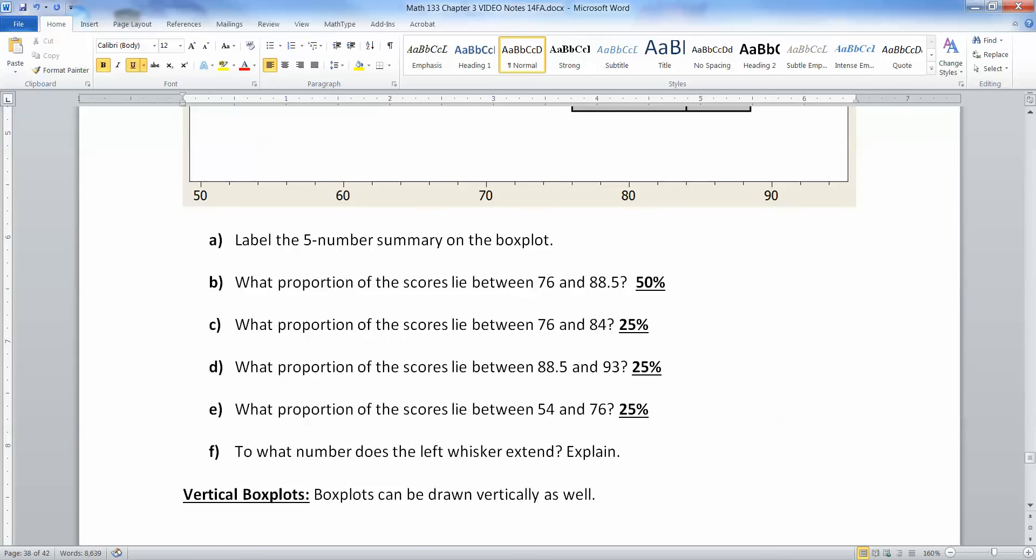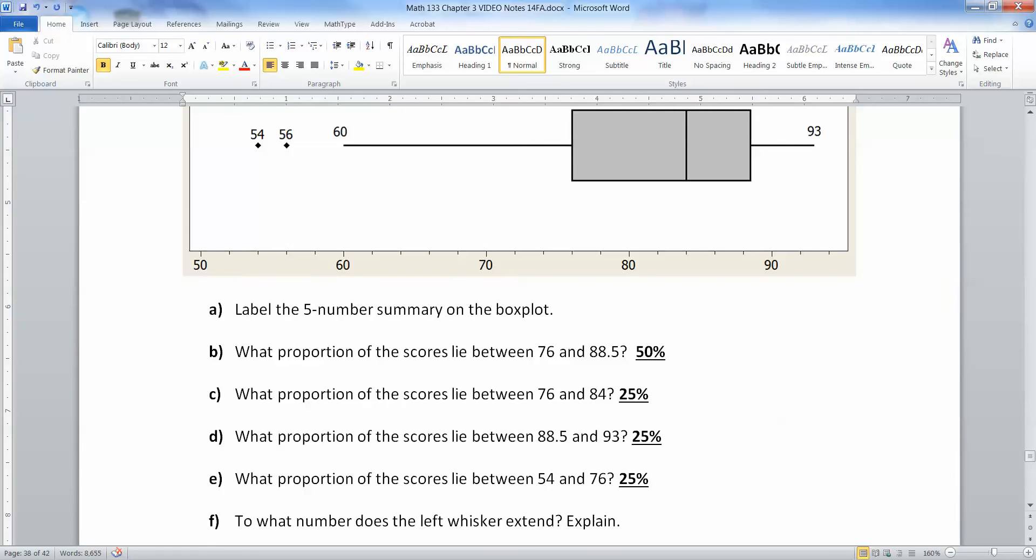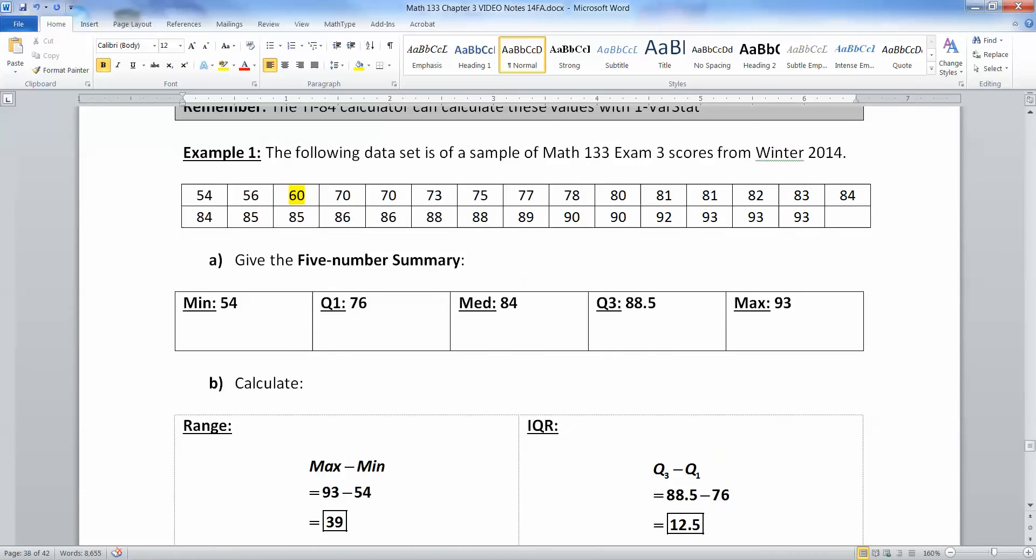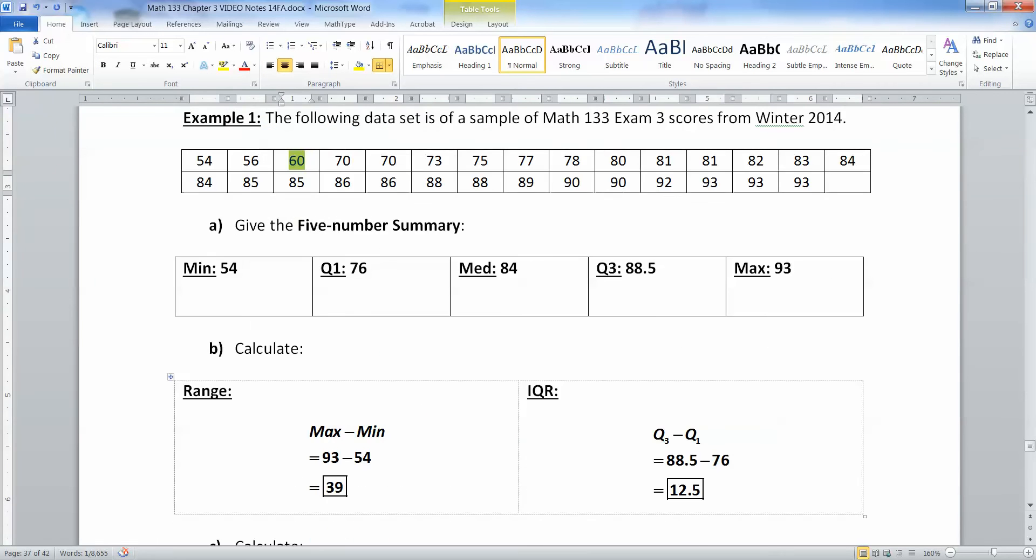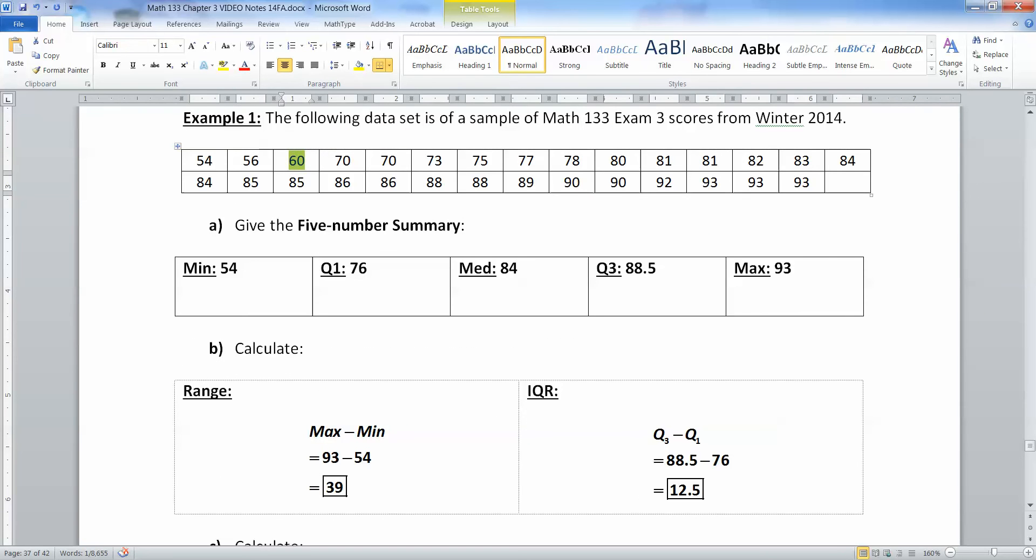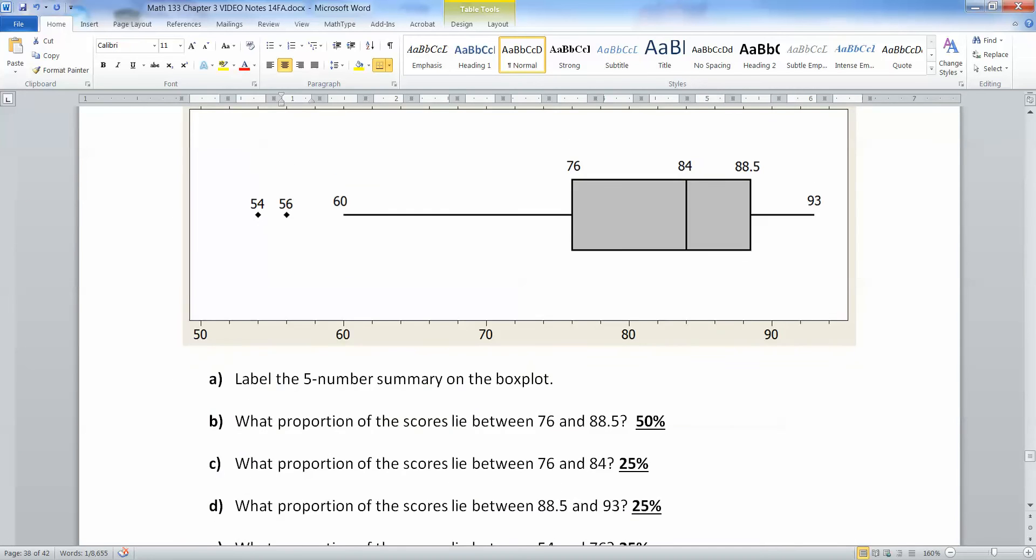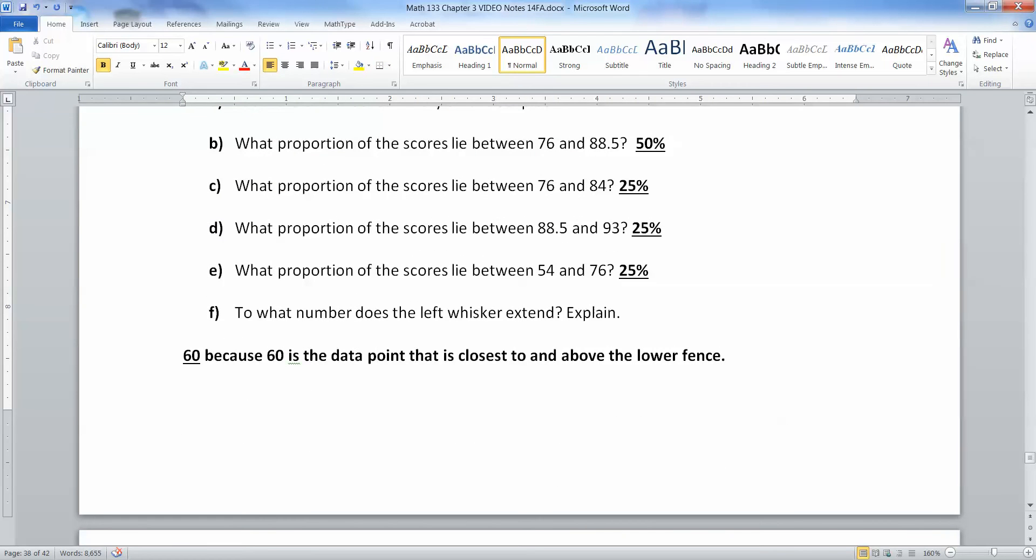To what number does the left whisker extend? That would be 60. And that's because 60 is the data point that is closest to and above the lower fence. So it's above the lower fence, so it doesn't count as an outlier. The 54 and 56 were outliers. They're below the lower fence. But 60 was the next point in the data set right here that was above that fence. The fence was right here, 57. So you can't go to 57 because there's no data point at 57. You go to the next one that's closest to that fence, but still over it. Almost the reverse of the price is right rules, right? You want to be closest to the fence and over it for the lower fence. For the upper fence, you want price is right rules. You want to be close to the fence, but under it.